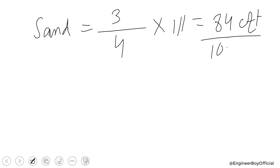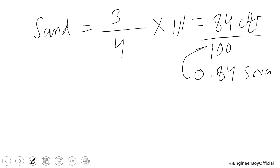You can also convert the sand quantity into a local unit. Dividing 84 by 100 gives approximately 0.84 of a local unit called a 'sacred', where 100 cft equals one sacred.